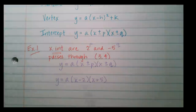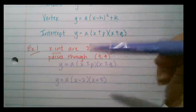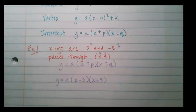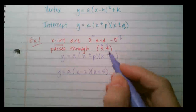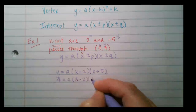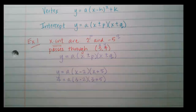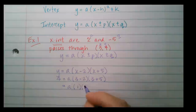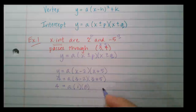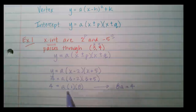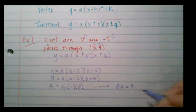Now I need to figure out what the value of a is. I'll use the point (3, 4) because that represents an x and y on the parabola. Filling in 4 for y and 3 for x, on the right side I have 1 in the first set of parentheses and 8 in the second, giving me 8a equals 4.